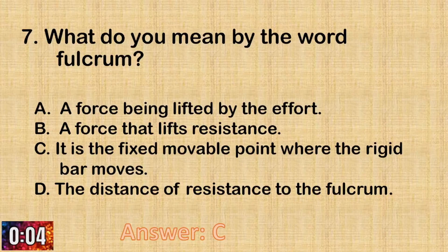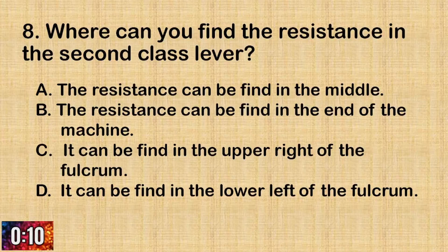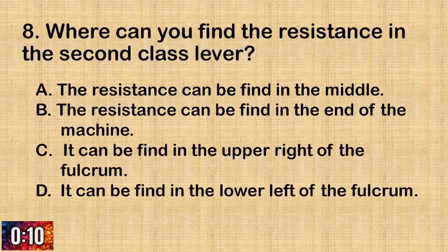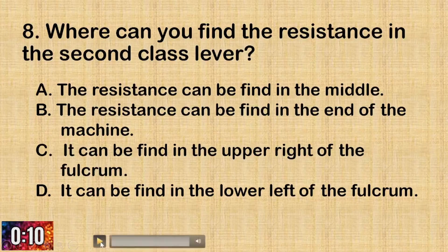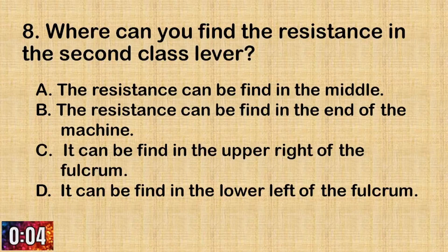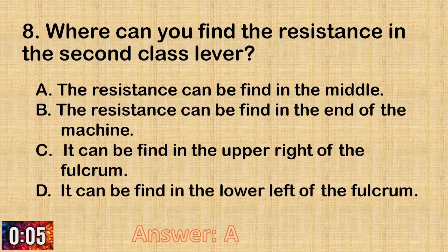Question number eight choices. A. The resistance can be found in the middle. B. The resistance can be found at the end of the machine. C. It can be found in the upper right of the fulcrum. D. It can be found in the lower left of the fulcrum. The correct answer is letter A: the resistance can be found in the middle.